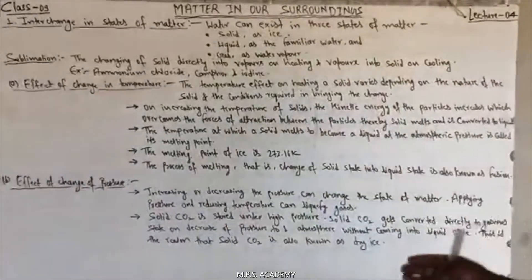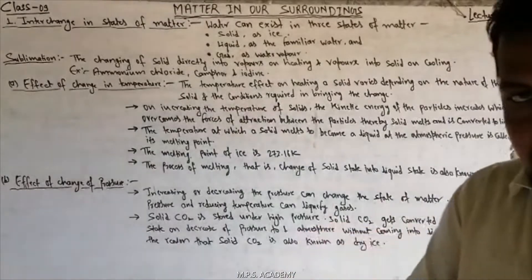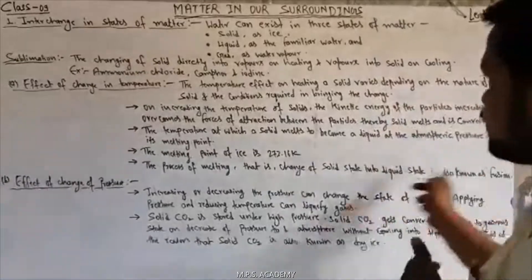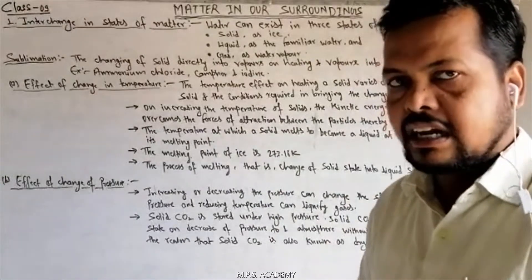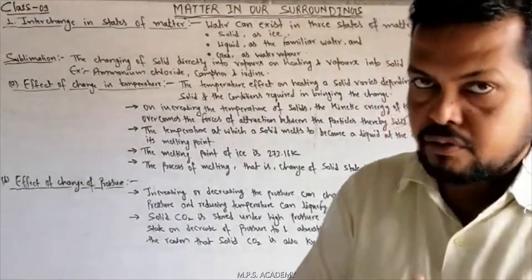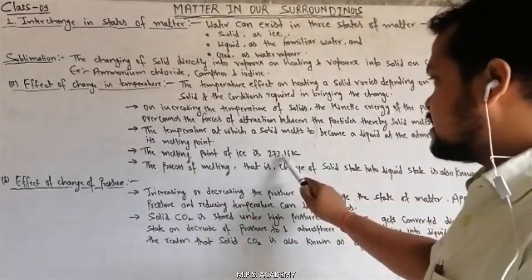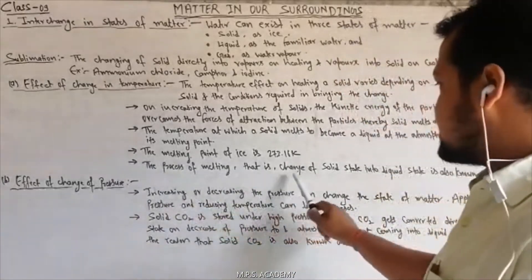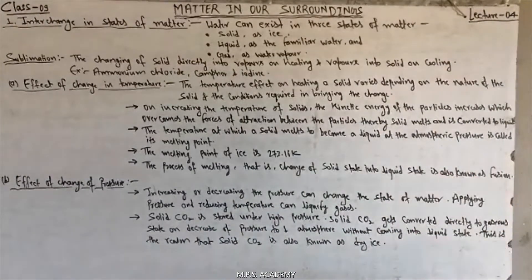मतलब वो तापमान जिस पर solid पिघलकर liquid में बनता है, standard atmospheric pressure पर, उसको उसका melting point कहते हैं। The melting point of ice is 273.16 Kelvin. The process of melting, that is the change of solid state into liquid state, is also known as fusion.